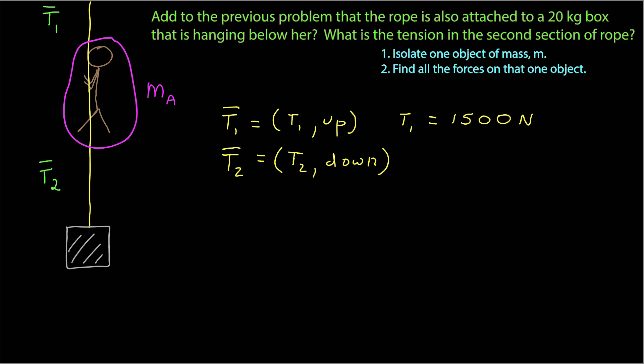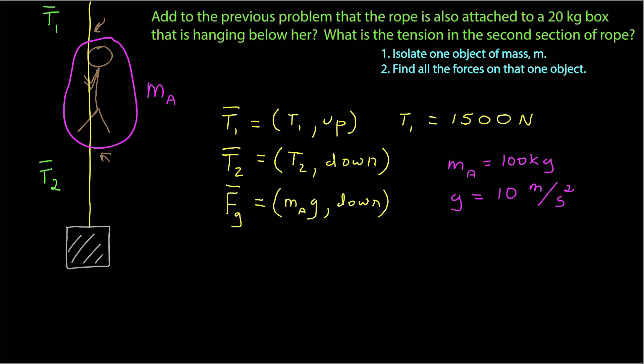Note that often you'll have objects with multiple ropes or wires going away from the object. You're going to have a tension force for every wire or rope that passes through your circle around your object. I have one more force — gravity — with a magnitude of m sub a times the acceleration due to gravity, directed down. I use the subscript m sub a to make sure I don't confuse it with the other mass in the problem.